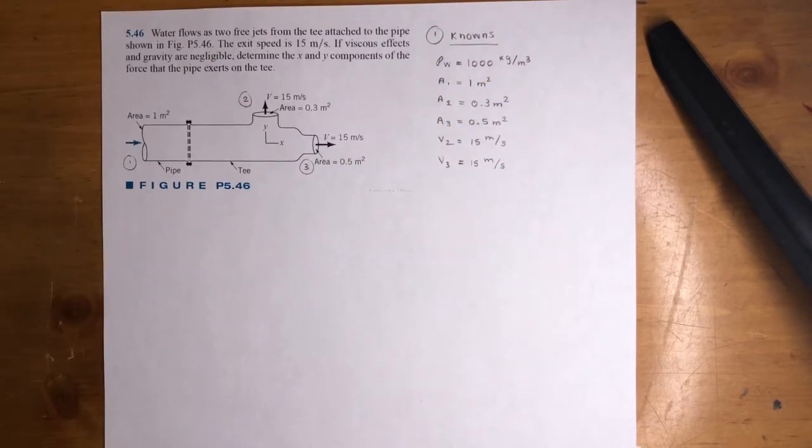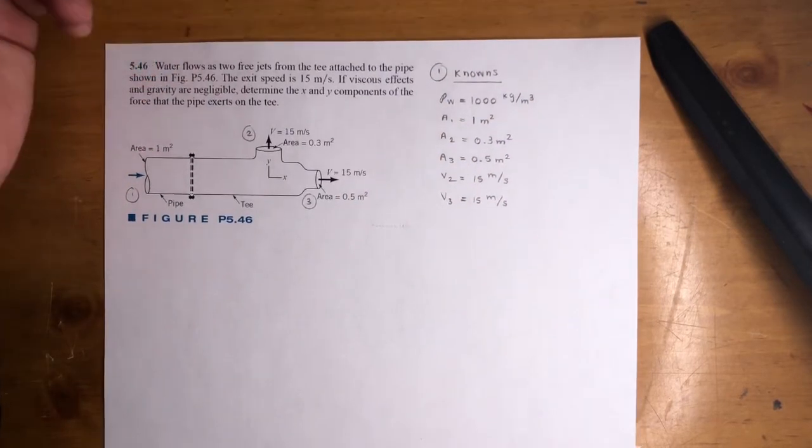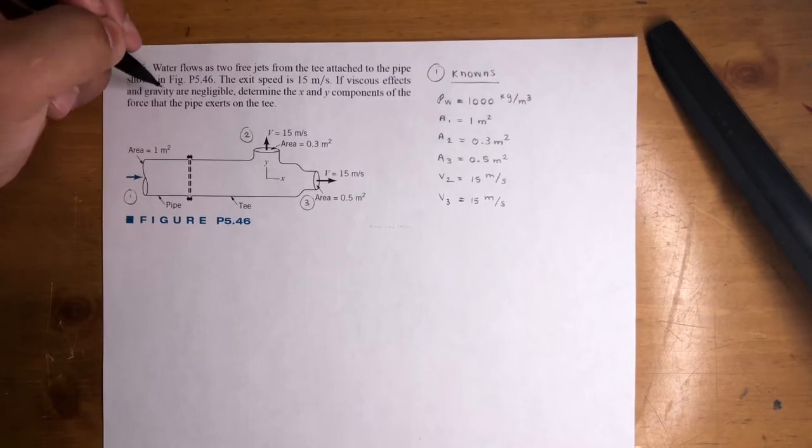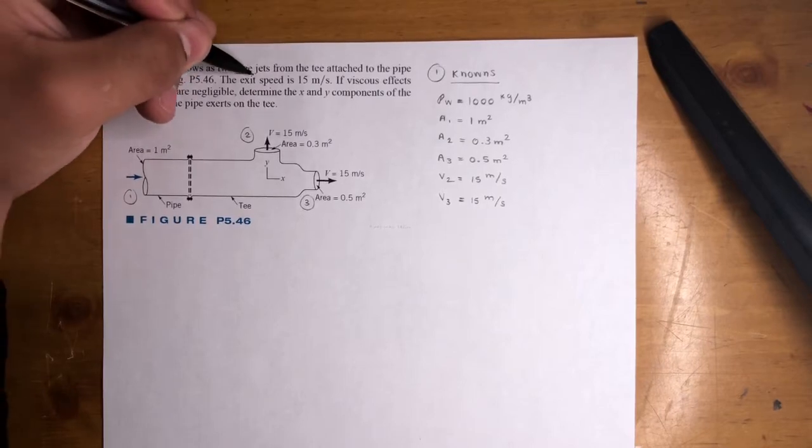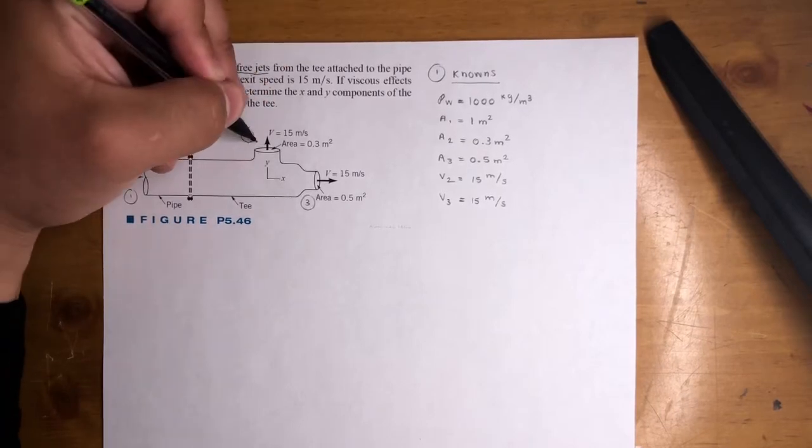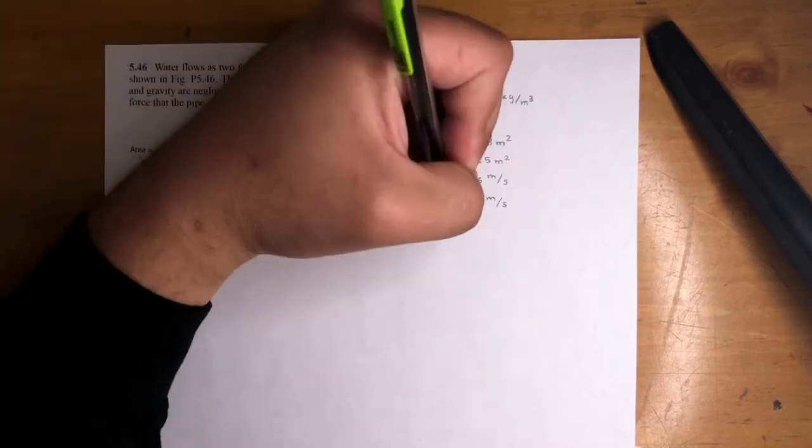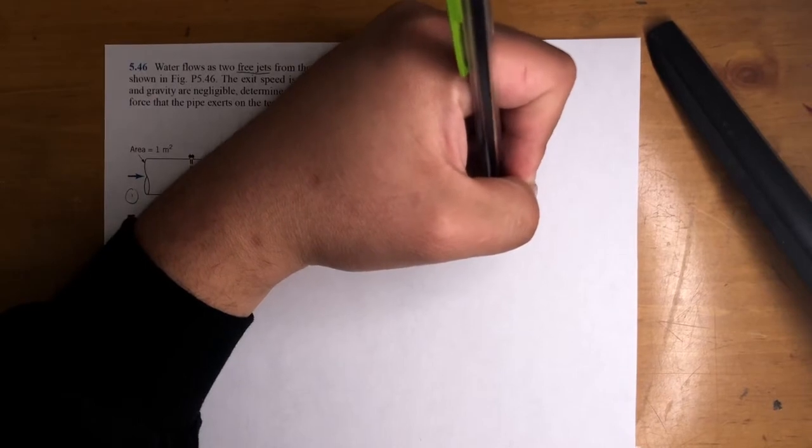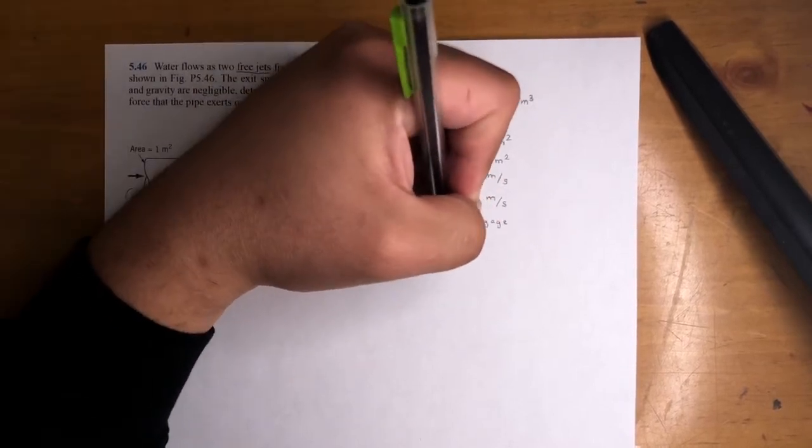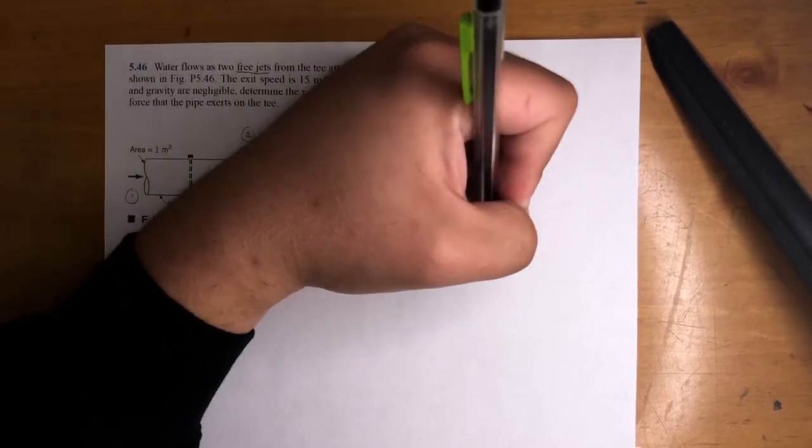What else? They said something about free jets, that's right. Free jets means P2 equals 0 and P3 equals 0. Those are keywords you got to look out for, and that's gauge. P2 equals 0 gauge, P3 equals 0 gauge.